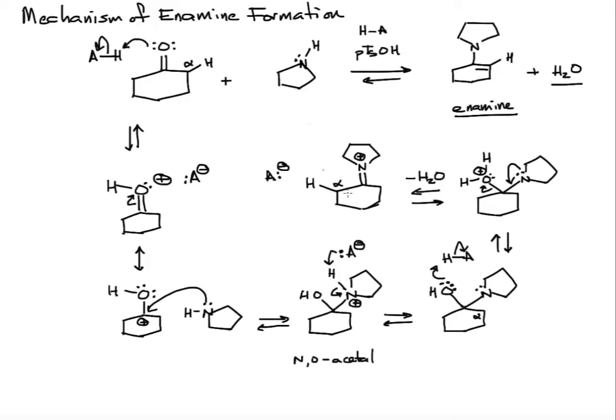What can happen to regenerate the catalytic amount of acid: this proton can be deprotonated. We break the carbon-hydrogen sigma bond, and we restore the lone pair on nitrogen to end up with our enamine.